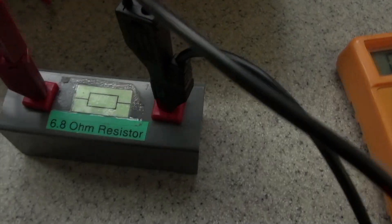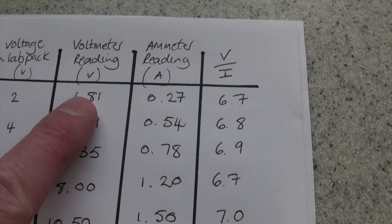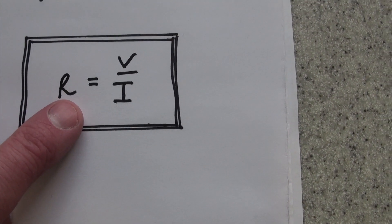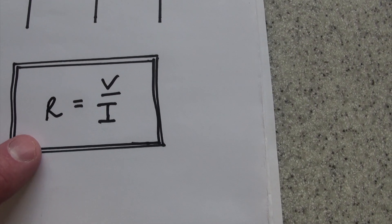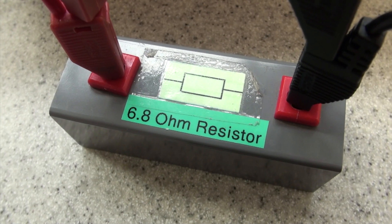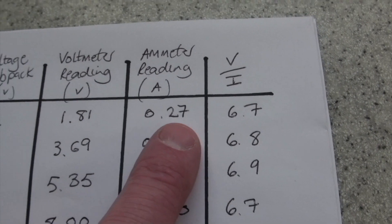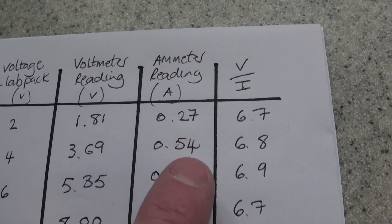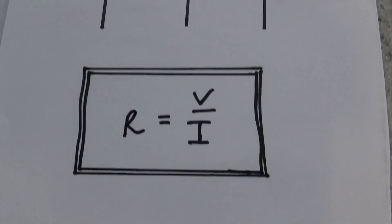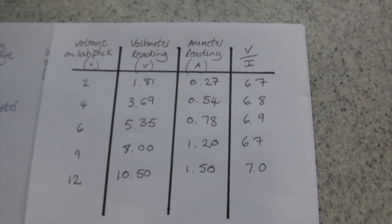The voltage divided by the current appears to give us the size of the resistor. Let's think more about that. So, the size of the resistor is actually telling us the ratio of the voltage to the current. In other words, if we have got a 6.8 ohm resistor, then the size of the current that we get is 6.8 times smaller than the voltage. In each of those rows there, the current is 6.7 times smaller than the voltage. The resistance is the ratio of the voltage to the current.